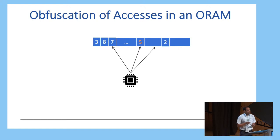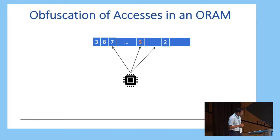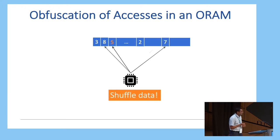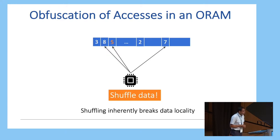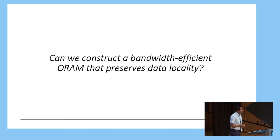The problem is that with an oblivious RAM, this obfuscation of accesses inherently breaks locality. In an ORAM scheme, if I'm accessing memory location 5, I end up accessing 5 and some spurious memory accesses. But more importantly, after performing this access, I end up shuffling my data around, and this shuffling inherently breaks data locality. So the question we ask in this work is: can we construct a bandwidth-efficient ORAM that preserves data locality?